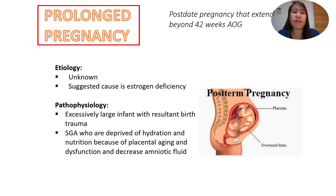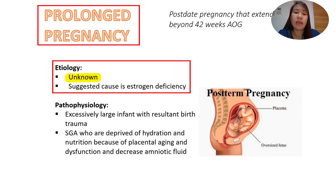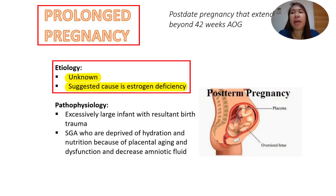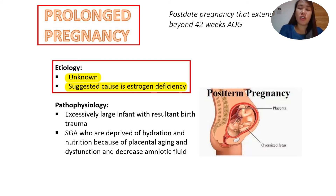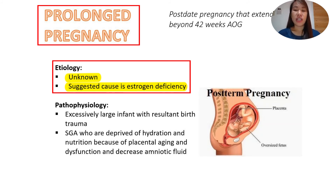What is the cause of prolonged pregnancy? The cause is unknown, but there are suggested causes — estrogen deficiency may lead to prolonged pregnancy. From clinical experience, prolonged pregnancies are sometimes noticed when the mother had preterm labor and was given many tocolytic medications to prevent contractions; sometimes their delivery is truly prolonged. But the exact cause is unknown and may be affected by estrogen deficiencies.